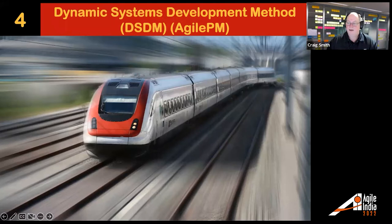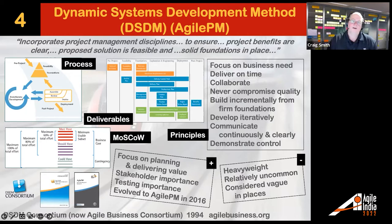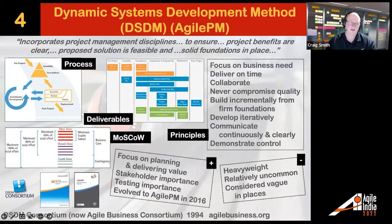DSDM was particularly popular throughout Europe in the 1990s, dating back to 1994. It was more structured and aligned to project management techniques of the time. If you're familiar with the MoSCoW technique — Must-have, Should-have, Could-have, Won't-have yet — that was described inside DSDM. In more recent years, in 2016, it evolved to something called Agile PM. It's relatively uncommon today but keeps popping up, and there is a lot of good stuff in there worth looking at.